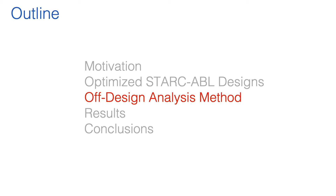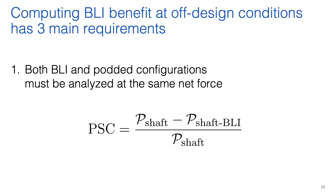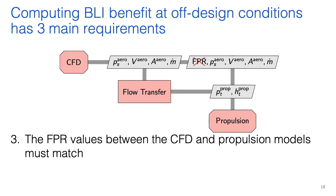Computing BLI benefit at off-design conditions has three main requirements. First, both BLI and podded configurations must be analyzed at the same net force, since the PSC metric is calculated with shaft power requirements at the same net force. Secondly, we assume the electric motor and power transmission system for the aft propulsor is sized at cruise conditions, and therefore we operate the BLI configuration using the same shaft power as at cruise. Finally, we must match the fan pressure ratio values between the CFD and propulsion models, as fan pressure ratio is a performance-critical parameter. For design conditions it is defined as an input to the propulsion model, while for off-design conditions it is an output that must be matched to the CFD result.